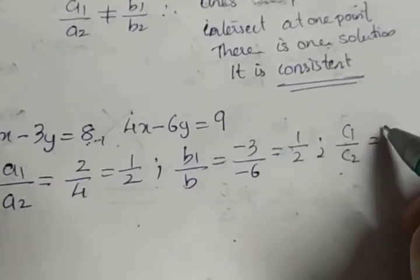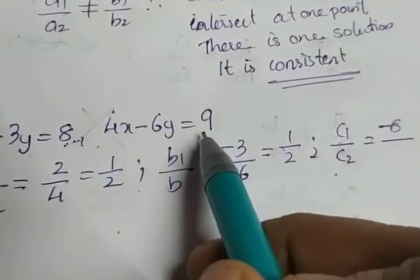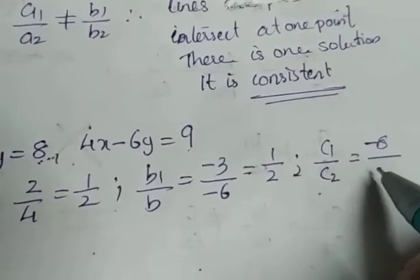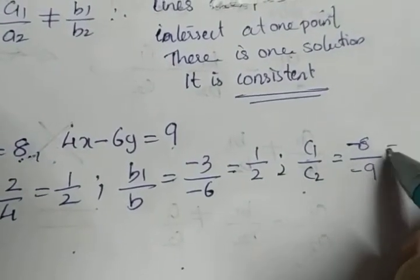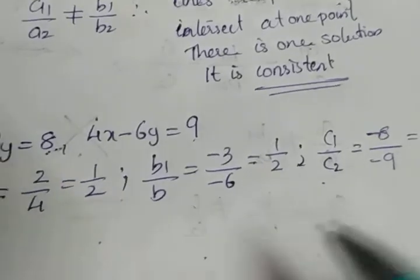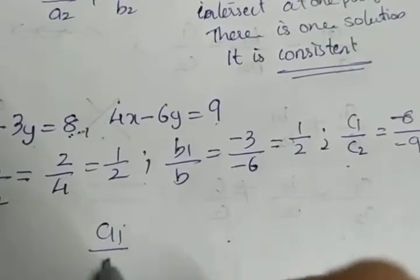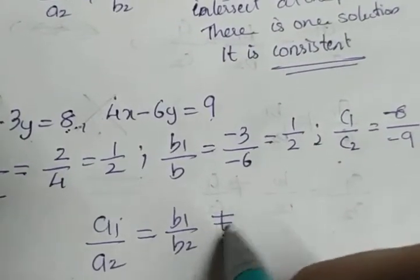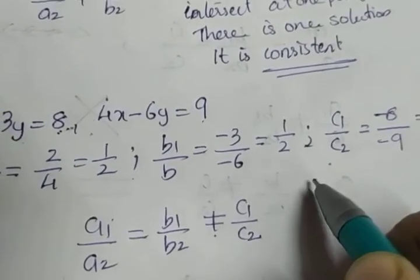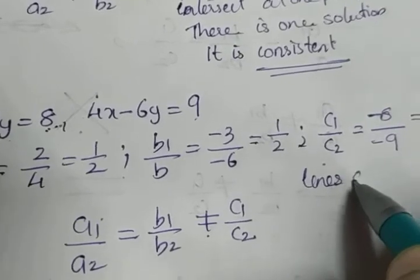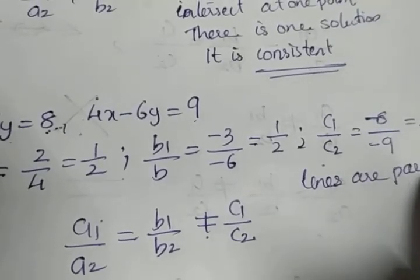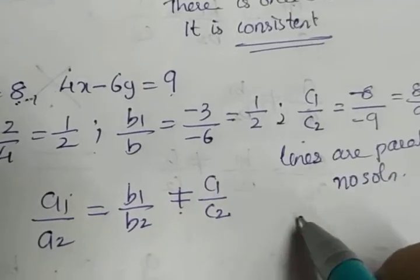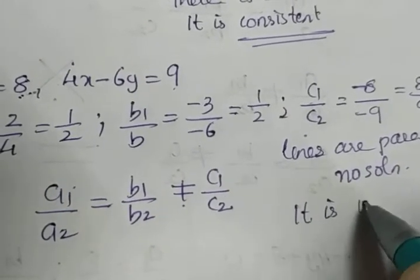While taking c1 by c2, we have to take the constant term to the left side. So c1 is minus 8, and c2 is minus 9, giving you minus 8 by minus 9, which is 8 by 9. So the condition is a1 by a2 equal to b1 by b2 not equal to c1 by c2. Therefore the lines are parallel, there is no solution, and the system is inconsistent.